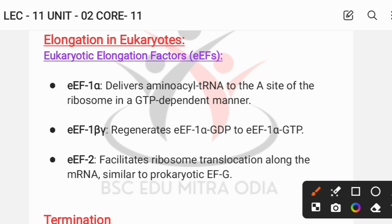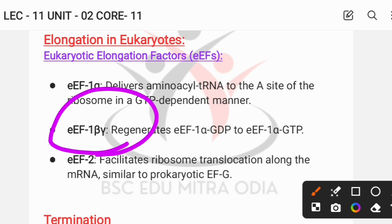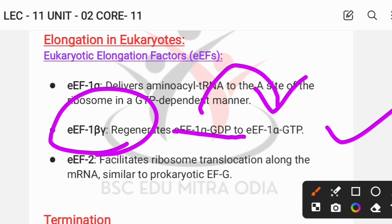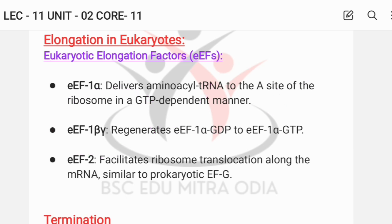Eukaryotic elongation factor 1 beta-gamma (eEF1βγ) regenerates eEF1α by exchanging GDP for GTP so it can further participate in the elongation cycle. Eukaryotic elongation factor 2 (eEF2) facilitates ribosome translocation along the mRNA, allowing the polypeptide chain — the protein — to grow as amino acids are added in sequence.